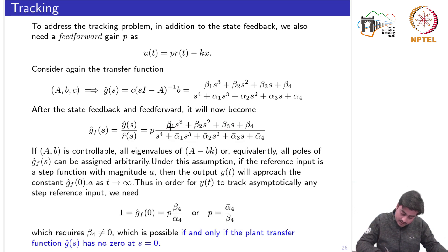As all the numerator and the denominator part will go to 0, the remaining part is beta 4 by alpha 4 bar and we want this g hat f of 0 is equal to 1 in that case only we would have y hat is equal to r hat in the steady state.